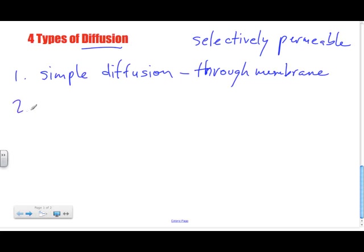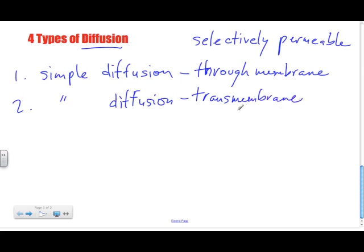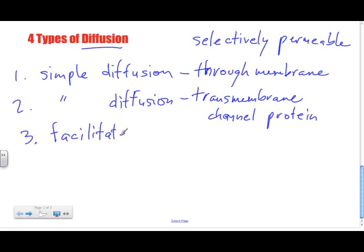There is a second type of diffusion, and that will be through what we call a transmembrane channel protein. These are proteins that span across the phospholipid bilayer, and they allow particles that are slightly larger to pass through easily. To differentiate this simple type of diffusion, step number three is called facilitated diffusion.